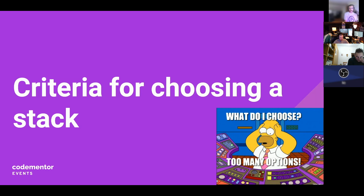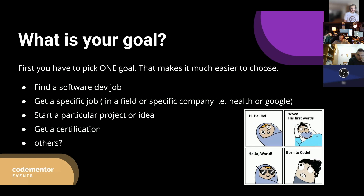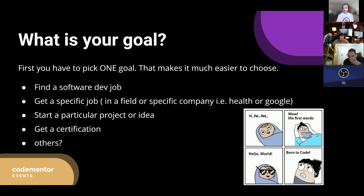There are two big questions to ask when thinking about what to learn and choose. There's so much out there — cool stuff, old stuff — and everyone will have an opinion. The first question is: what's your goal? Get specific. Is it just getting a software dev job, getting a job in the software industry, or a specific job at a specific company? You want to pick what's important to you because that determines the next step.